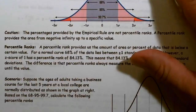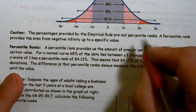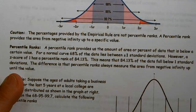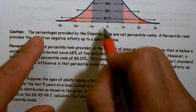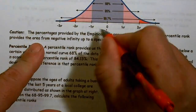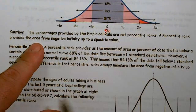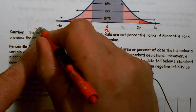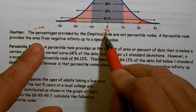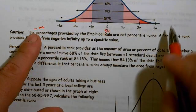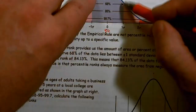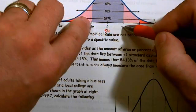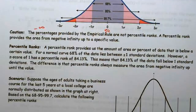One important caution: the percentages from the empirical rule are not percentile ranks. A percentile rank goes from negative infinity up to some value. Zero is at the 50th percentile — half the data is larger, half is smaller. The empirical rule measures distance from the center: plus or minus one is 68%, meaning 68% of data lies within one standard deviation of the mean — but that's not the same as a cumulative percentile.